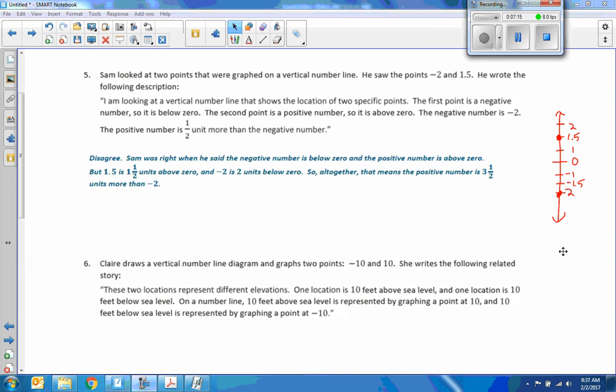Here we go. Sam was right when he said the negative number is below zero. The positive is above. But 1.5 is 1.5 units above zero. And negative 2 is 2 units below zero. So all together that means the positive number is 3.5 units more than the negative 2. It was not real accurate to understand.